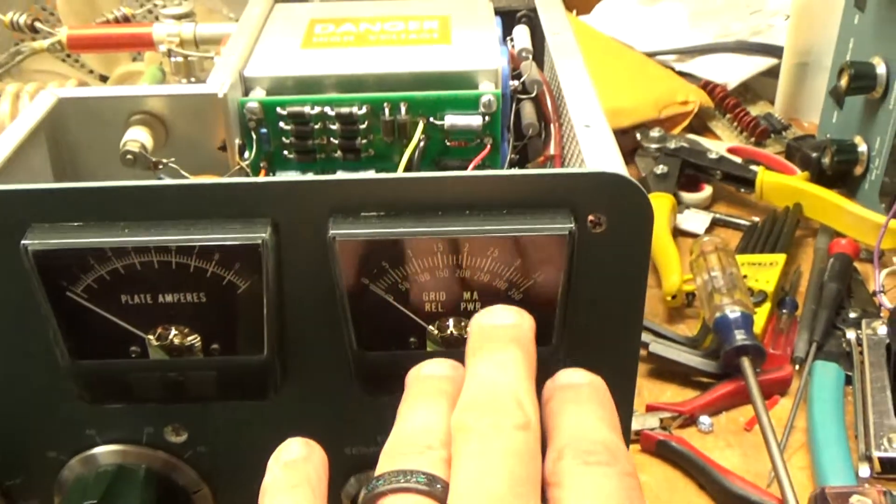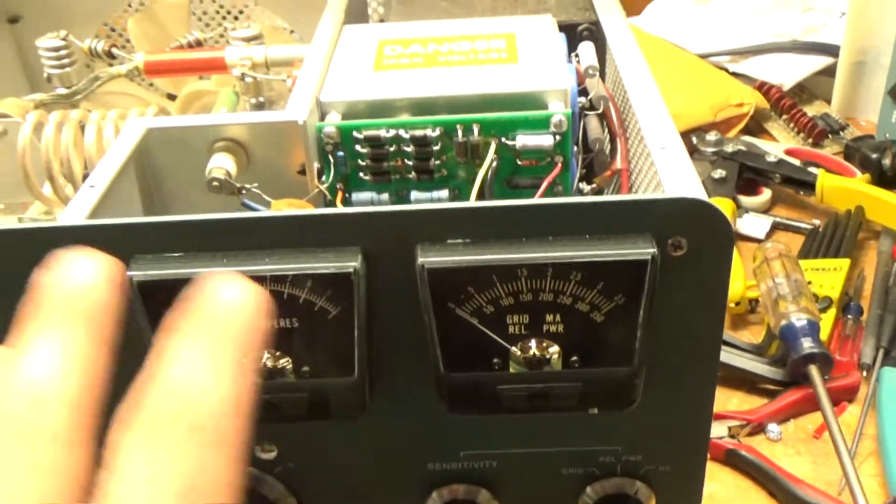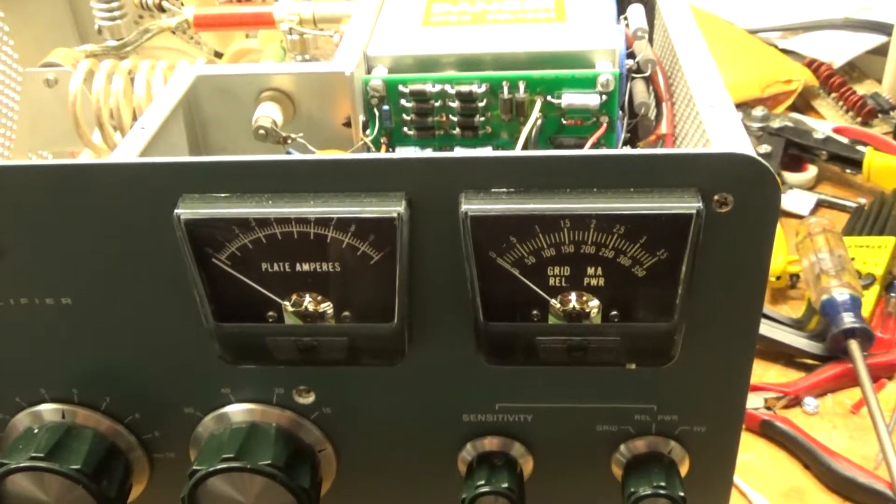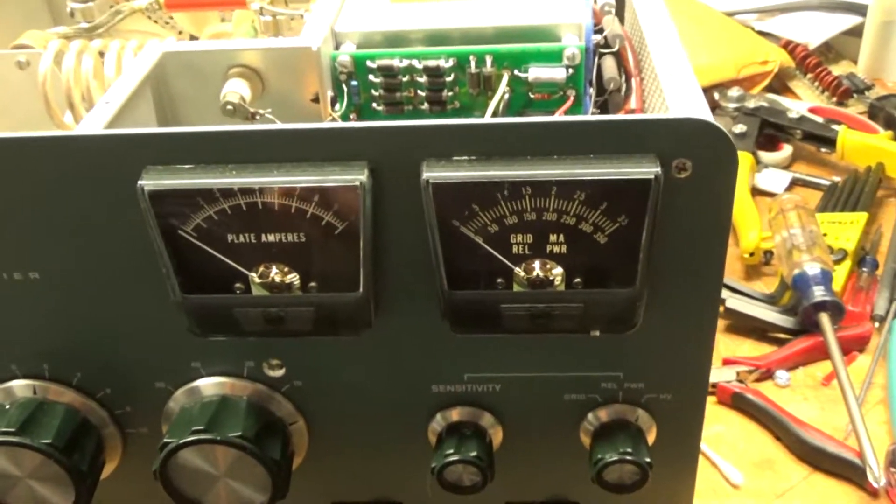So high voltage meter now works. Plate current meter works properly. Relative output meter works properly, grid current meter works properly.